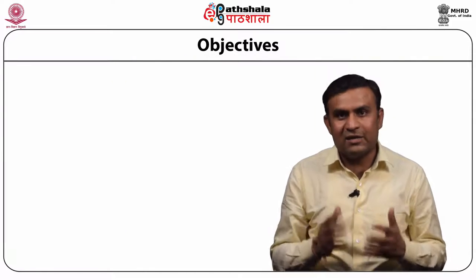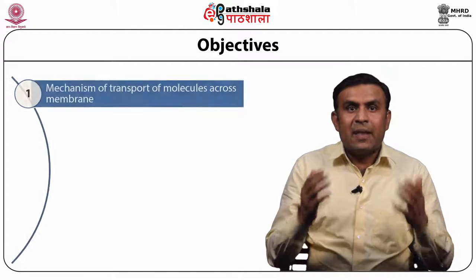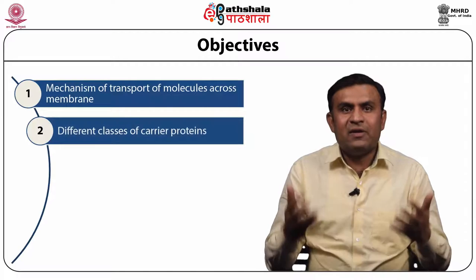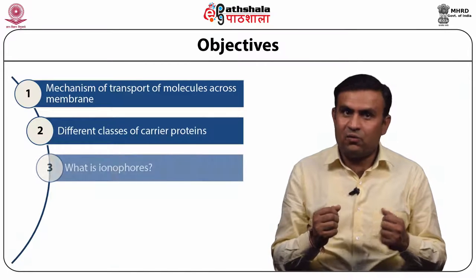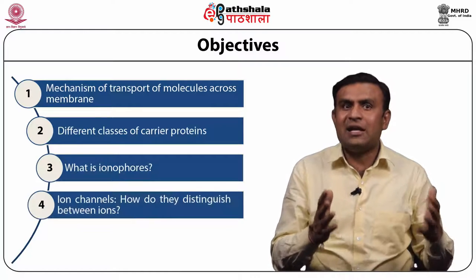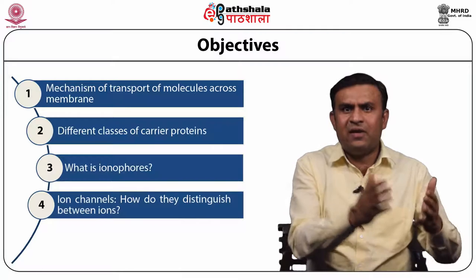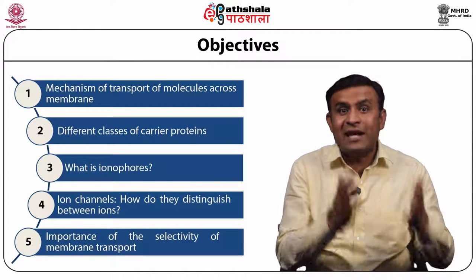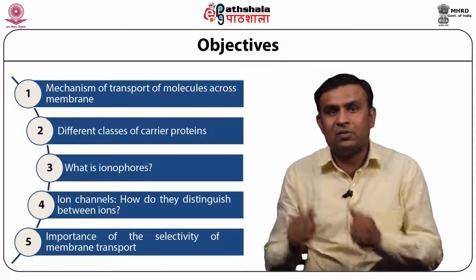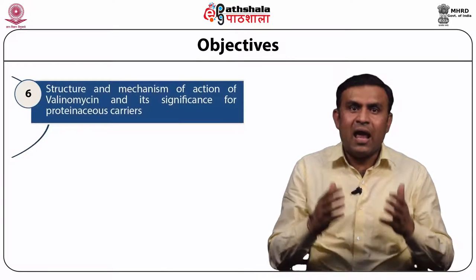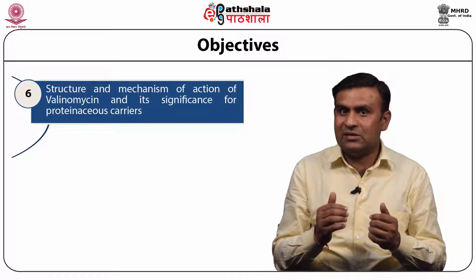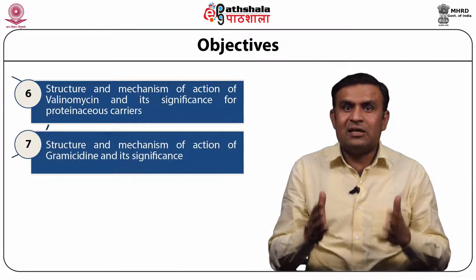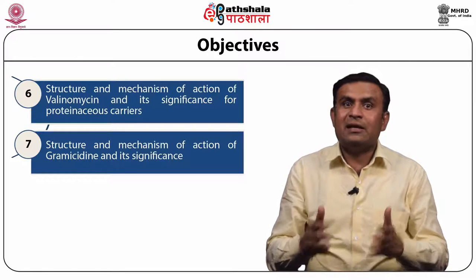The objectives of today's module: first, we learn the mechanism of transport of molecules across the membrane and the different classes of carrier proteins. What are ionophores? How ion channels distinguish between different ions — selectivity for charge and size — and the importance of selectivity during membrane transport. We also study the structure and mechanism of action of valinomycin, its significance as a proteinaceous carrier, and the structure and mechanism of action of gramicidin and its significance.